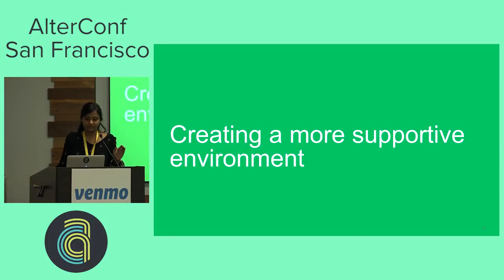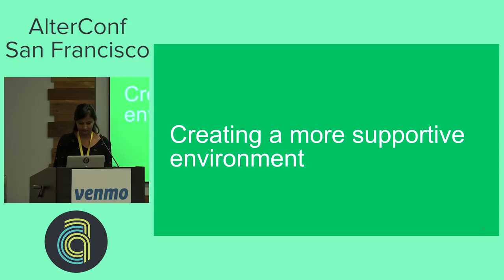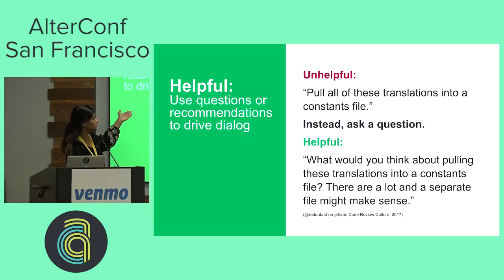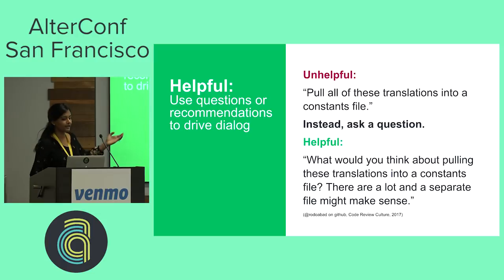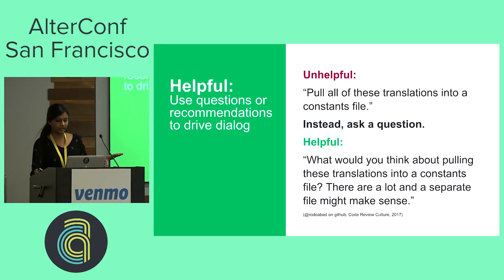Now I'd like to share some examples of behaviors that help make your team's code review culture more supportive. The goal is to help people appreciate the benefits of these feedback processes without the sarcasm and meanness. You should try to use questions or recommendations to drive dialogue. So instead of making a demand like 'pull all these translations into a constant file,' you could phrase it like 'what would you think about pulling these translations into a constant file? Since they're a lie and a separate file might make sense at this point.' This way you're phrasing comments as questions and recommendations and allowing dialogue instead of just making demands.